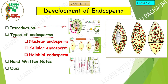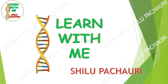There are 3 different types of endosperms: nuclear, cellular, and halobial endosperm. Handwritten notes will be provided; if you want the notes in PDF format, you can get them from our Telegram channel found in the description box. At the end of the video there will be one quiz question for you to answer in the comment section. Welcome to this channel, Learn With Me. I am Shilu Pachauri.